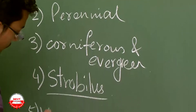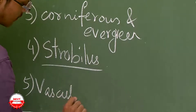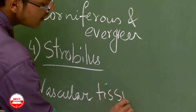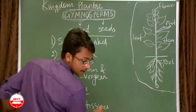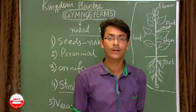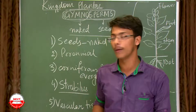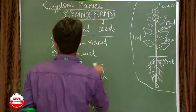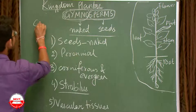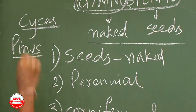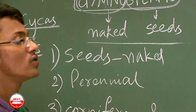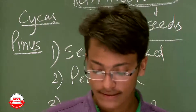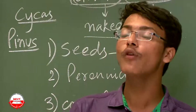The last point is that gymnosperms have vascular tissues — that is, xylem and phloem. Examples of gymnosperms are Cycas and Pinus.